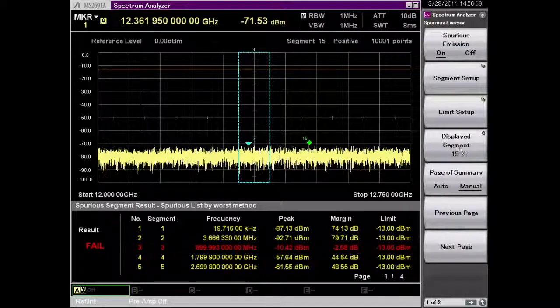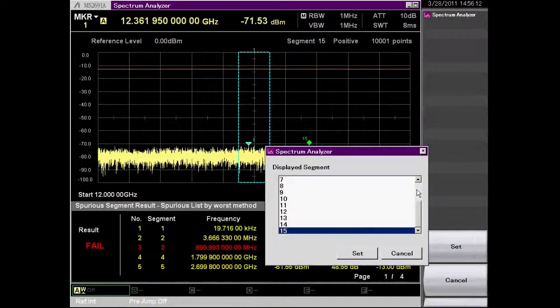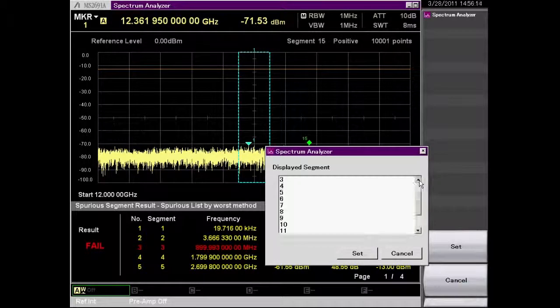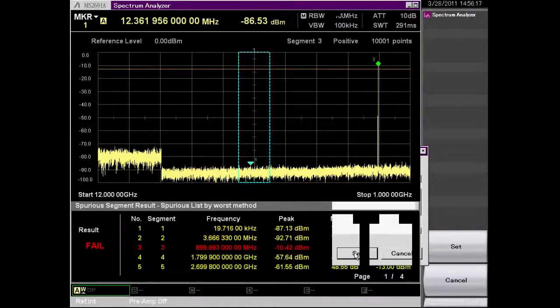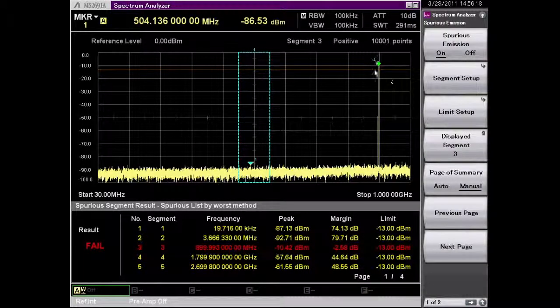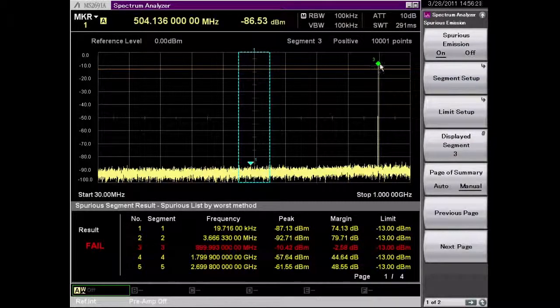I can actually display the segment for the failing condition. Go to segment 3. And I can see right here is where my failure is at around 900 megahertz.